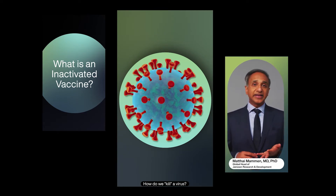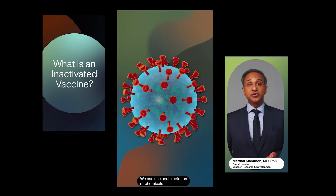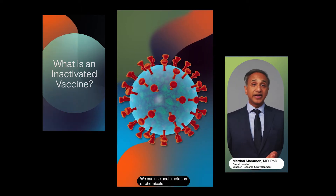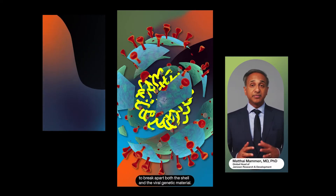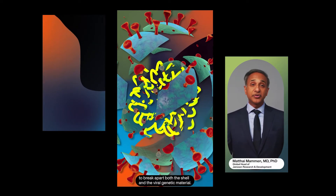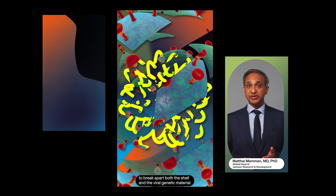How do we kill a virus? We can use heat, radiation, or chemicals to break apart both the shell and the viral genetic material.